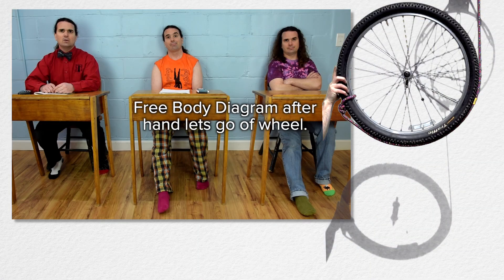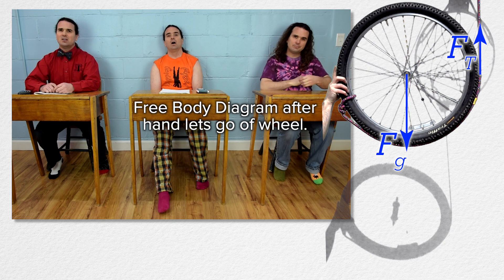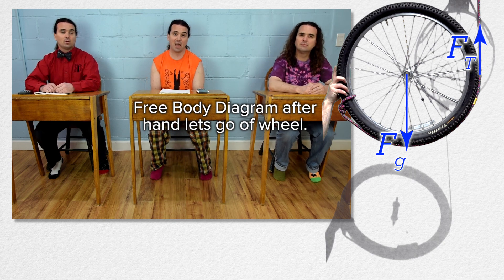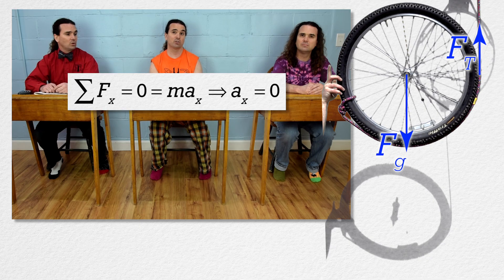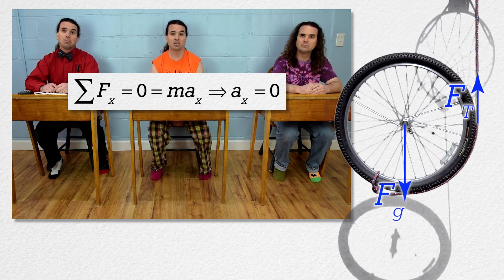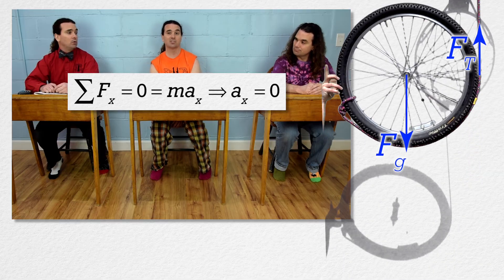Billy, could you please do that? The force of gravity on the wheel acts down at the center of mass of the wheel. The force of tension from the rope acts up at the location where the rope last touches the wheel. And that's it — those are all the forces. There are no forces acting in the x direction, so the net force in the x direction equals zero, and the acceleration of the wheel in the x direction equals zero.